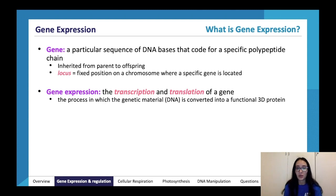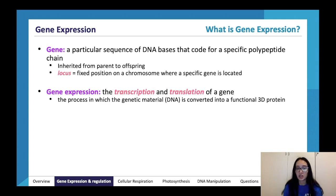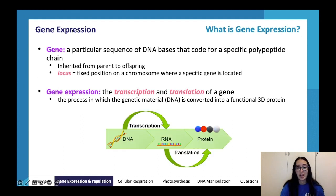A gene is a particular sequence of DNA bases which encodes for a specific polypeptide chain. These are inherited from parent to offspring and kept within particular loci — loci is the plural of locus — which is a fixed position in a chromosome where a specific gene is located. Gene expression itself is the transcription and translation of a gene: the process by which genetic material such as DNA is converted into a functional 3D protein.